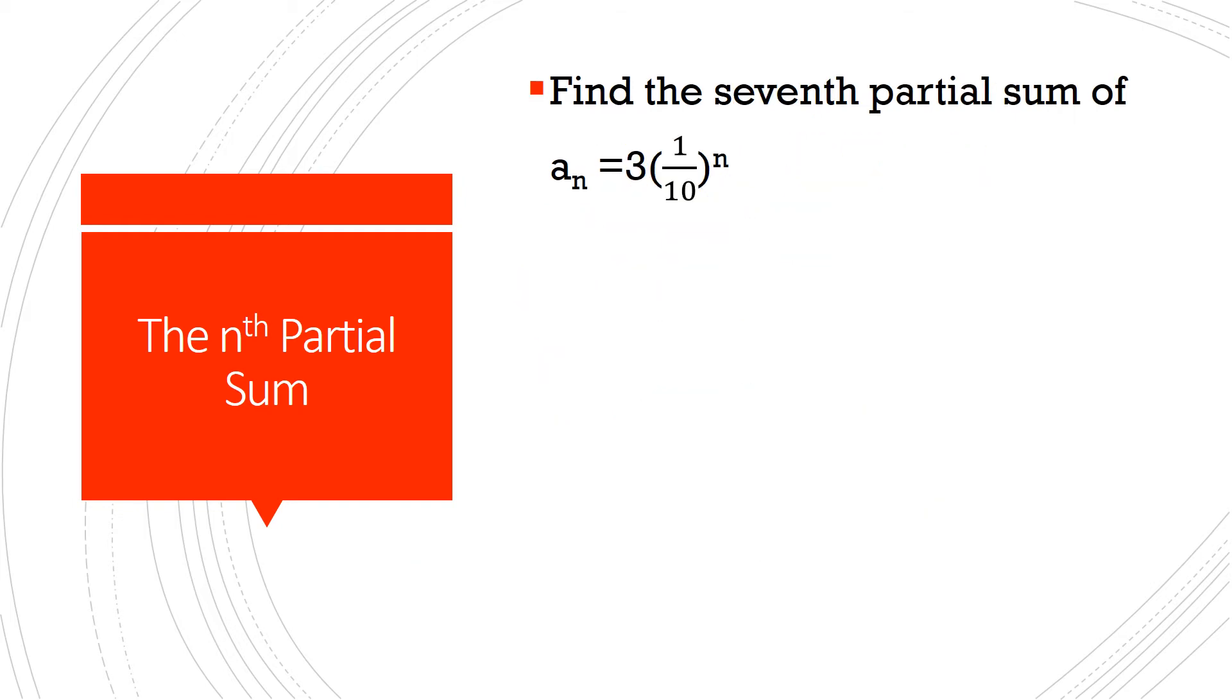Now we're asked to find the seventh partial sum of a_n equals 3 times (1/10) raised to the power of n. And we don't even know what a1 is, but that's okay. We'll substitute 1 for n right there. So then we would have 3 times (1/10) raised to the power of 1. Anything raised to the power of 1 is just equal to itself. And so a1 is going to equal 3 tenths or 0.3.